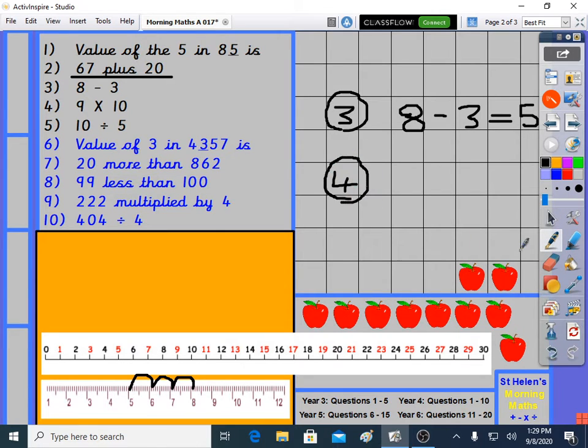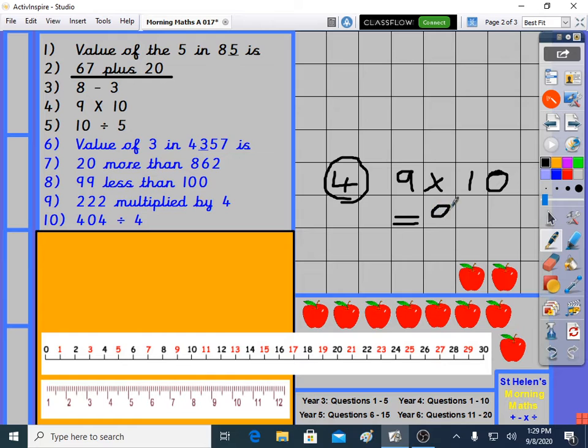Question 4 is next. Question 4 is multiplication. 9 times 10. It's when you've got 9. But you haven't just got it once. You've got it 10 times. Or we could sing our 10 times table. It would be best in year 3. We could sing our 10 times table 9 times. So 10 and 20. 30 and 40. 50 and 60. 70. 80 and 90. And I get 90. That's 10 times 9, which is the same as 9 times 10. So number 4 is 90.